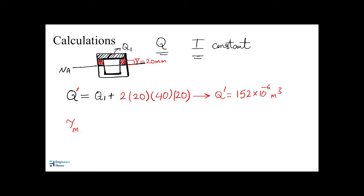Now we can find the maximum shear stress. V is constant, I is constant, and the thickness of the beam is constant, but Q has changed to Q prime. Plugging in the values, the maximum shear stress is obtained.